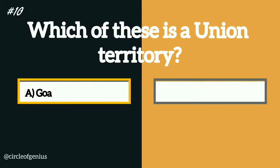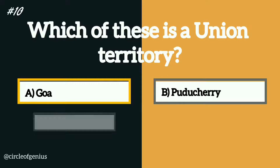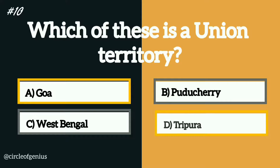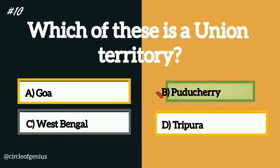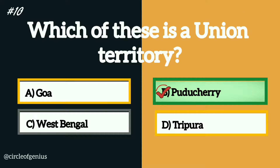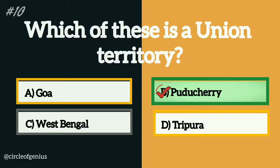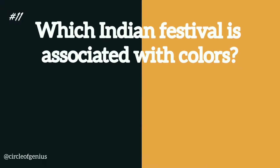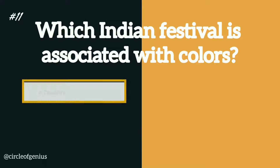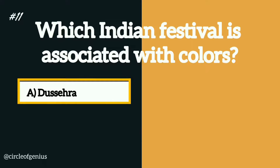The correct answer is option B, Puducherry. Question number eleven: which Indian festival is associated with colors? Option A: Dasara, B: Navratri, C: Onam, D: Holi.